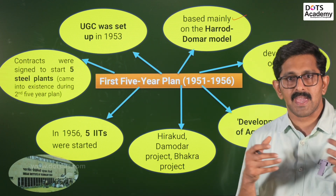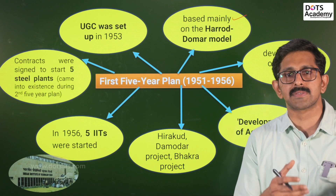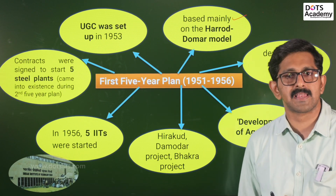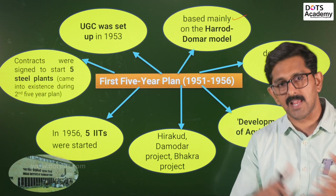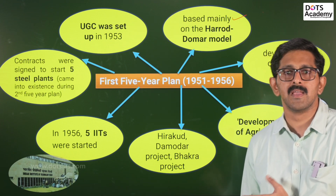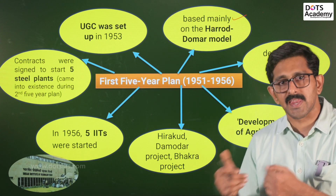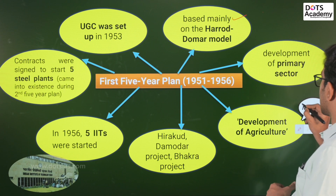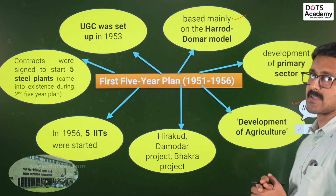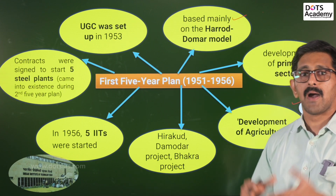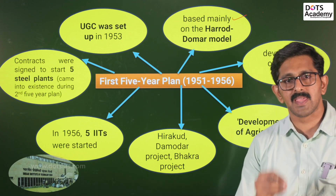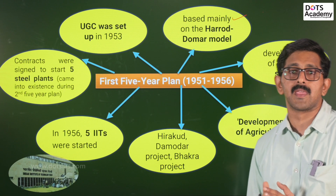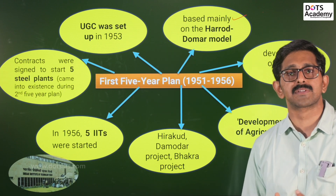In the primary sector, we use raw materials and natural resources — for example, agriculture, fishing, mining and quarrying. The main motto was to develop the primary sector. The first five-year plan focused on agricultural sector development, including irrigation facilities, irrigation dams such as Hirakud Dam, Bakra Dam, and Damodar Valley Corporation.